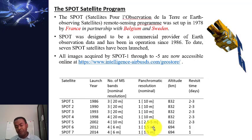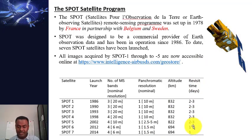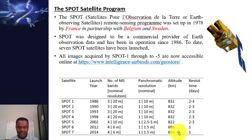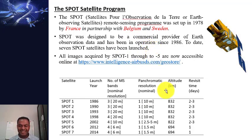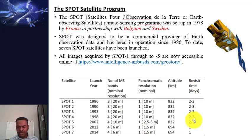SPOT imagery at 1.5-meter resolution is well suited for urban applications. The temporal resolution is also much better — SPOT can provide good quality data every one day, compared to Landsat which has a temporal resolution of 16 days. So in terms of both spatial and temporal resolution, SPOT imagery is better than Landsat.